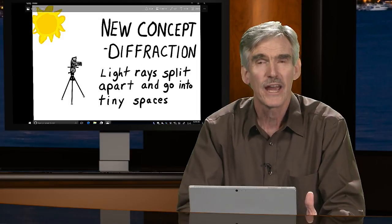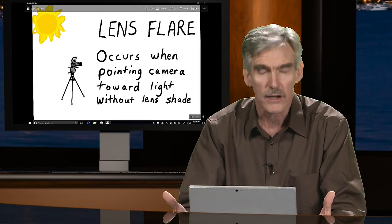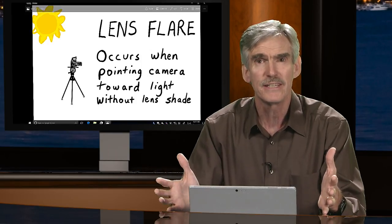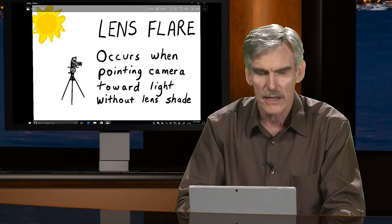In photography we have a similar phenomenon known as lens flare. It's similar to diffraction because it involves light coming into the lens and reflecting and bouncing around between lens elements, creating an image. The good thing about lens flare is that we can actually use it creatively to our advantage. Lens flare usually only occurs when you're pointing the camera toward the source of light without a lens shade or lens hood, because there's too much light overwhelming the lens's ability to focus.